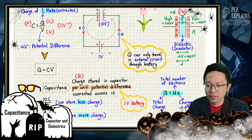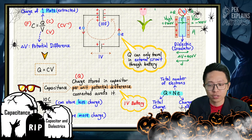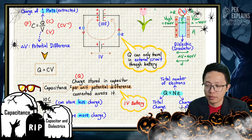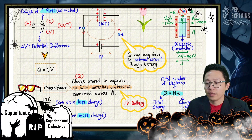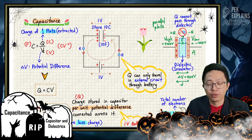To charge up a capacitor we must use a battery — a power supply with a potential difference, a voltage. Per unit potential difference means per one volt connected across the capacitor. Capacitance is charge per unit potential difference. So capacitance equals charge divided by voltage.